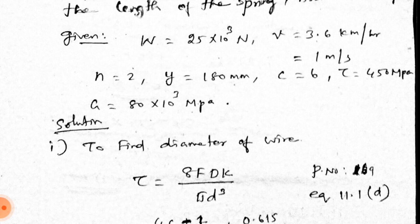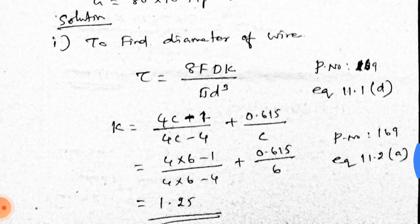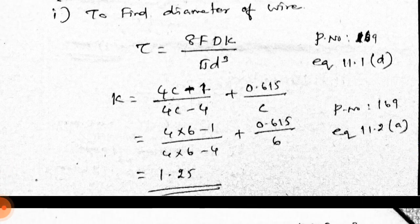To find the diameter of the wire, we use: tau = 8FDK / (π d³), from page 169, equation 11.1d. The Wahl's correction factor K = (4C − 1)/(4C − 4) + 0.615/C, from equation 11.2a. Substituting C = 6, K = 1.2525 approximately.